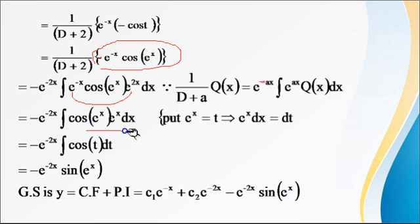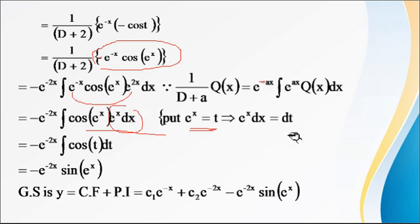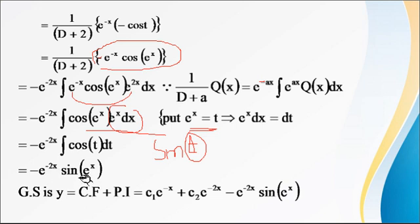Again use the substitution e raised to x equal to t, so e raised to x dx equal to dt. Replacing, e raised to x becomes t and e raised to x dx becomes dt, giving the integral of cos(t) dt. The integral of cos(t) is sin(t). Replacing t back with e raised to x, we get sin(e raised to x). Therefore PI equals minus e raised to minus 2x times sin(e raised to x). The general solution is y equals CF plus PI, that is c1 e raised to minus x plus c2 e raised to minus 2x minus e raised to minus 2x times sin(e raised to x).